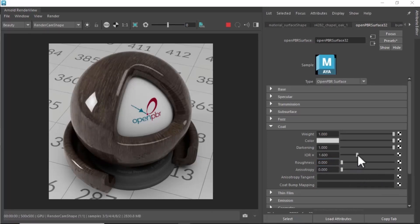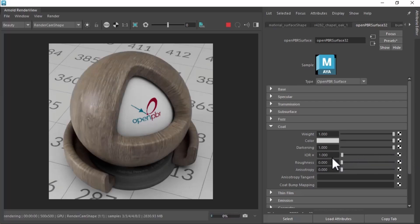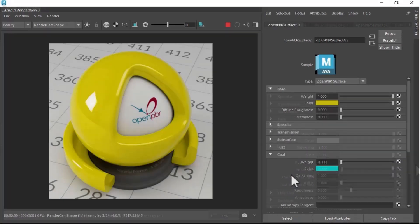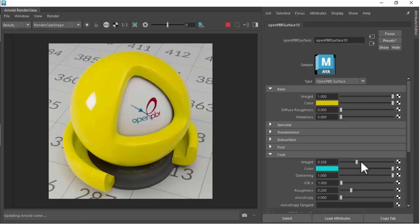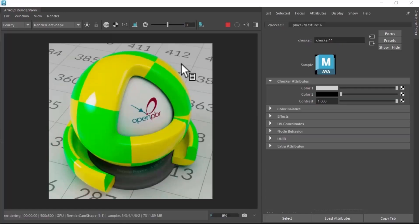The coat has its own roughness and anisotropy properties independent of the base. The coat is a dielectric, so also has its own coat IOR, which alters the strength of the reflection. Additionally, the coat can absorb light producing a tint, controlled by coat color. Notice how the coat color affects the base color due to absorption.